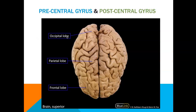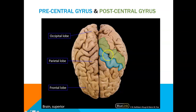Moving forward, we can now learn about the precentral gyrus and the postcentral gyrus. The precentral gyrus is part of the frontal lobe and is in charge of the primary motor cortex. Posterior to this area we have the postcentral gyrus, which is part of the parietal lobe and is also called the primary somatosensory cortex. You can remember the order by thinking it is alphabetical — motor comes before somatosensory — or think of it as motor goes in the front of the car. Both gyri are found on the right hemisphere as well, so it is bilateral.